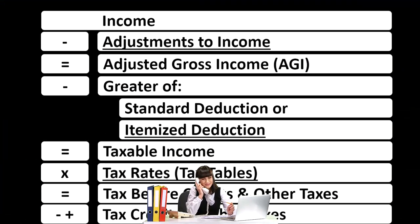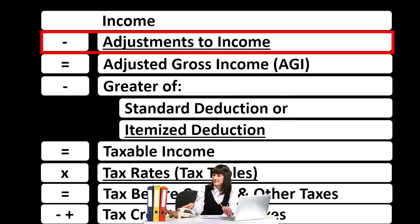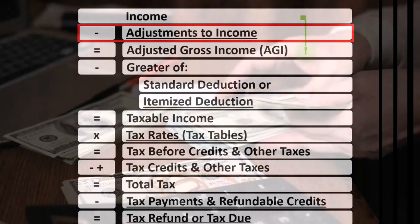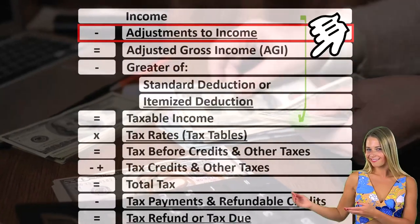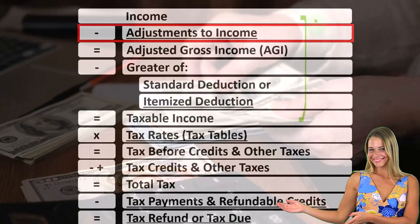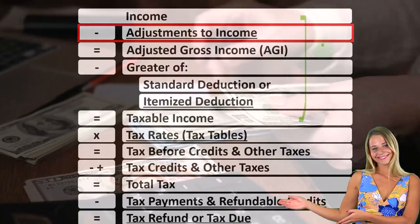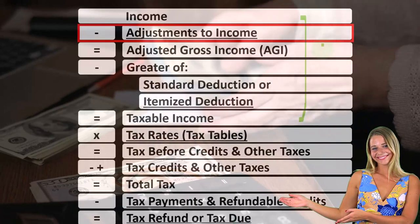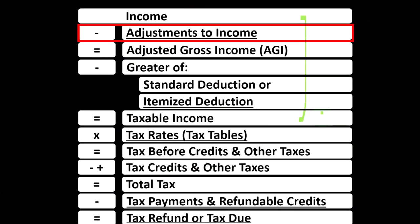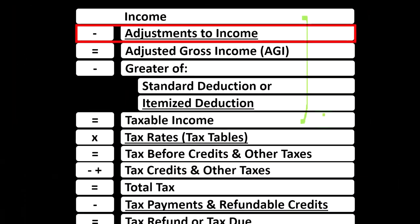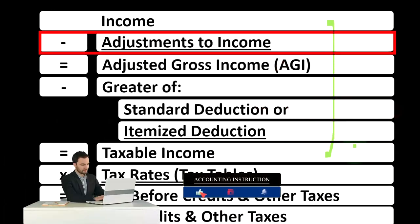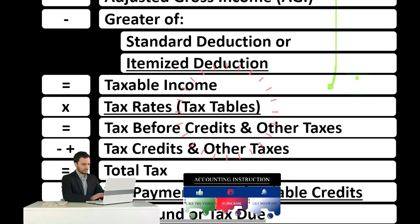Looking at the income tax formula, we are now focused on the adjustments to income, remembering that the first half of the income tax formula is in essence an income statement — although a strange one — where we have income minus the equivalent of expenses, being the deductions, getting us down to the bottom line, the equivalent of net income, this being the taxable income. Our objective is upside down: we want the taxable income as low as possible.